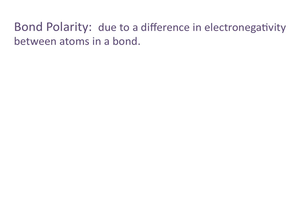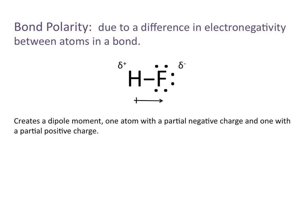Bond polarity is due to a difference in electronegativity between atoms in a bond. Looking at the molecule HF, fluorine is more electronegative than hydrogen and has a greater pull on the bonded electrons than hydrogen does, creating a partial negative charge on fluorine and a partial positive charge on hydrogen. This difference in charge creates a dipole moment, which we represent with an arrow.